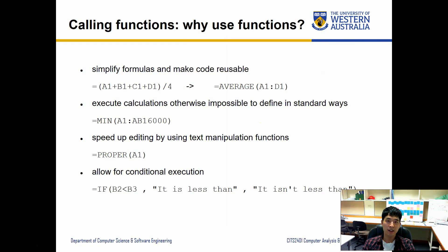For instance, finding a minimum value between 16,000 values that are inputted. So we have 16,000 different numbers, find the minimum value. And by inspection, this is going to take a while. Formulas can easily calculate this within microseconds. Speed up editing by using text manipulation functions.